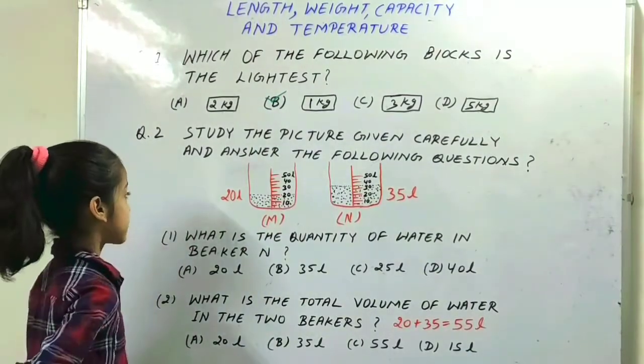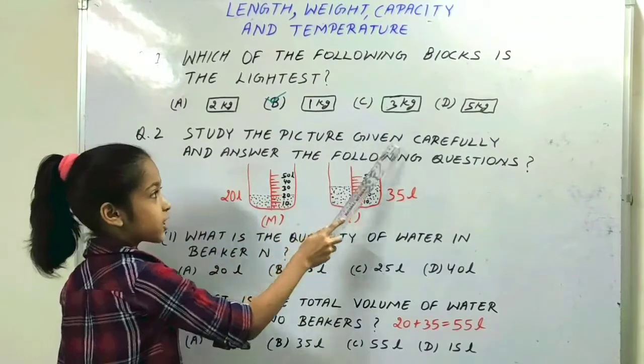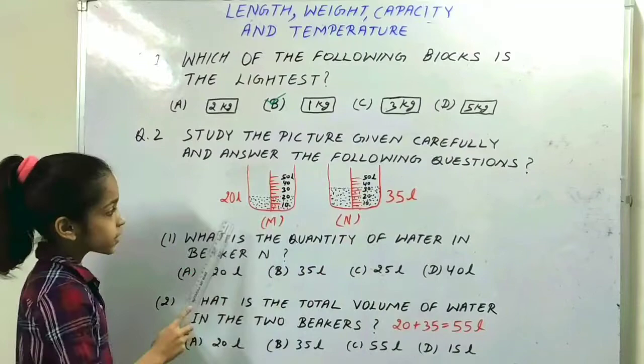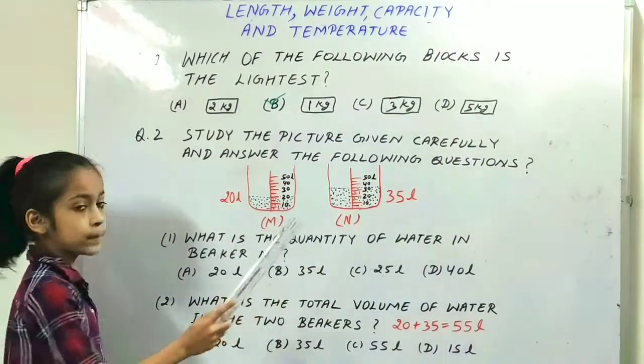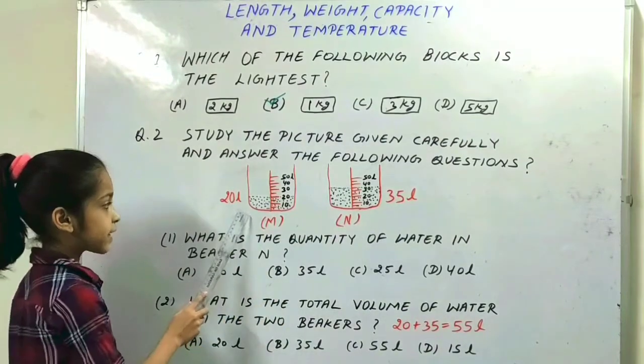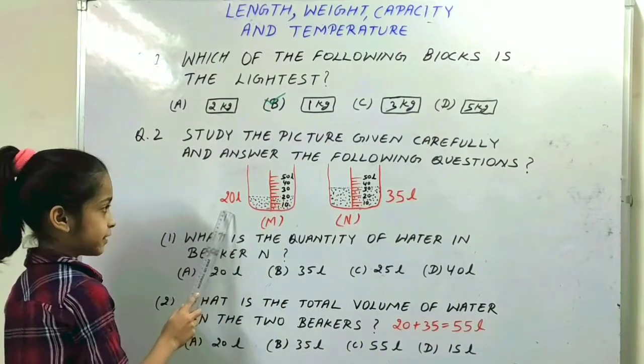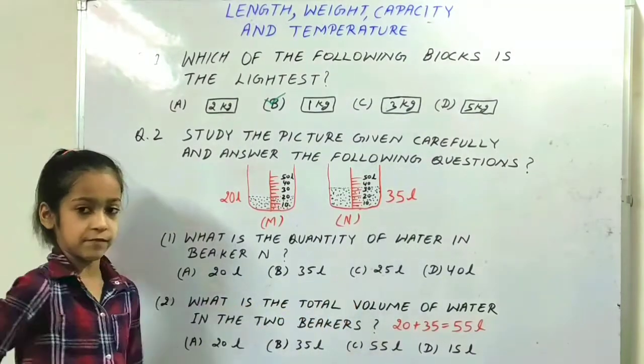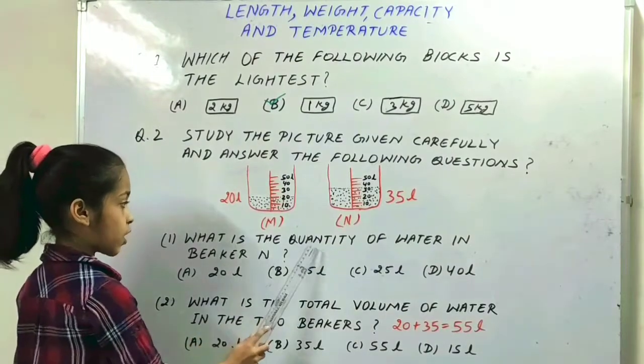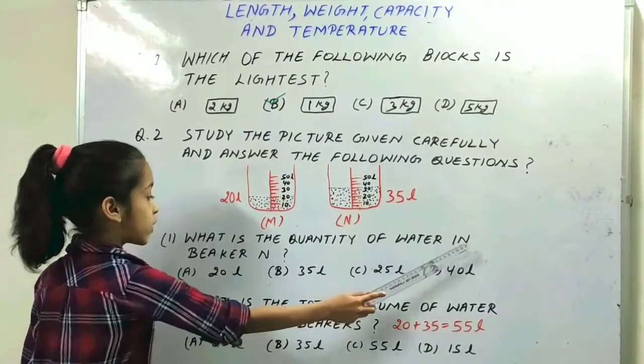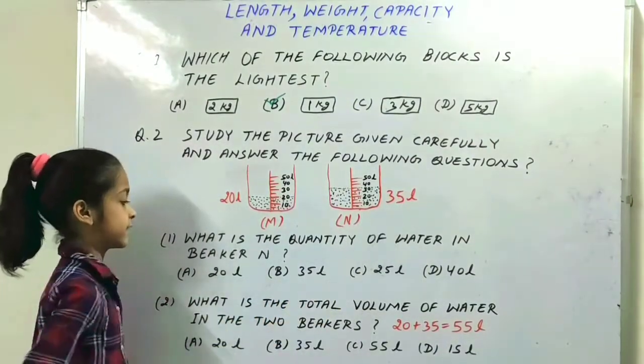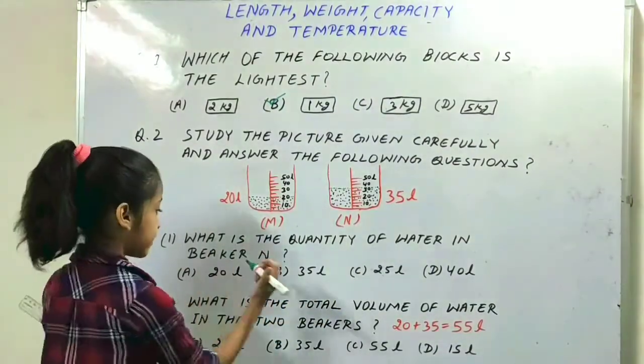Our next question is: study the picture given carefully and answer the following questions. Here are two beakers, beaker M and beaker N. Beaker M contains 20 liters and beaker N contains 35 liters. So our question is which is the... Option B is the right option.